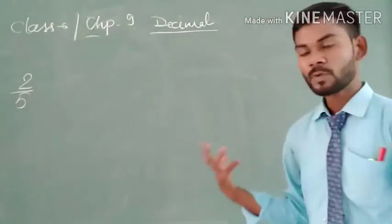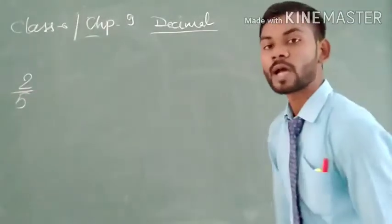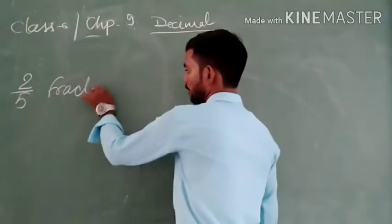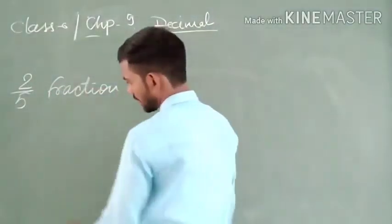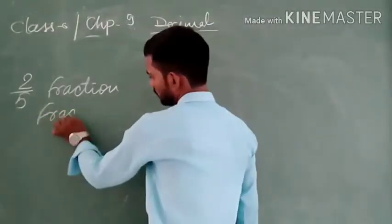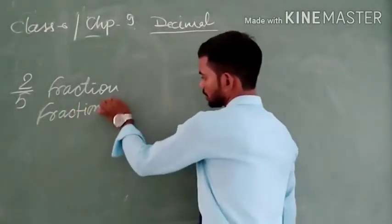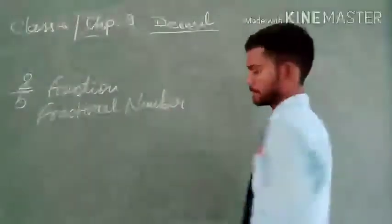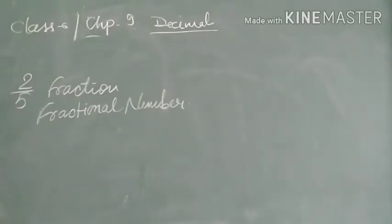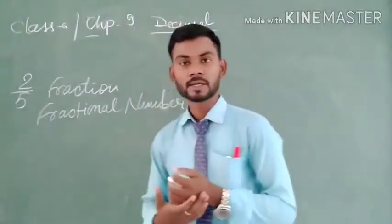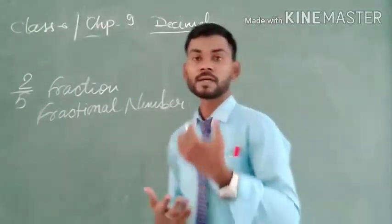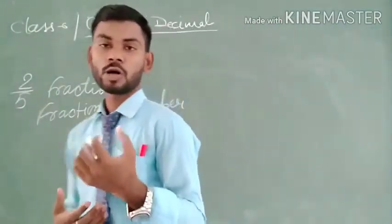Then your answer will be: this is a fraction, this is a fractional number. In the same way, here we also say that the number which has a decimal point is called a decimal number.